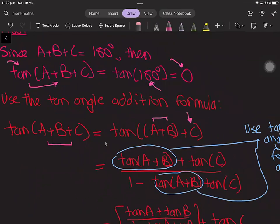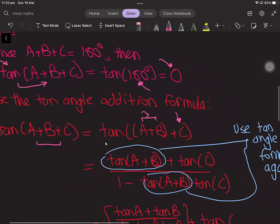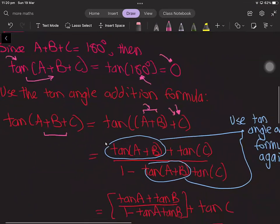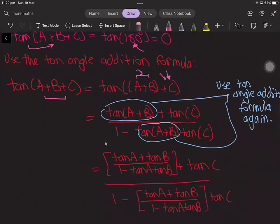So now we're adding two terms where one of the terms is A + B and the other term is C. And the tan angle addition formula looks like this: tan(A + B) + tan(C) divided by 1 - tan(A + B)tan(C).